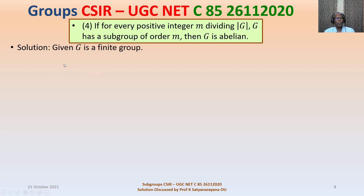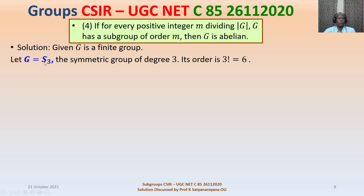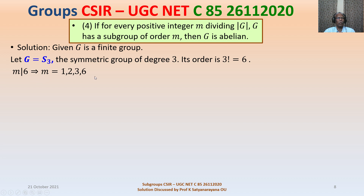Consider G = S₃, the symmetric group of degree 3 on 3 letters. Its order is 3! = 6. The divisors M of 6 are M = 1, 2, 3, 6.